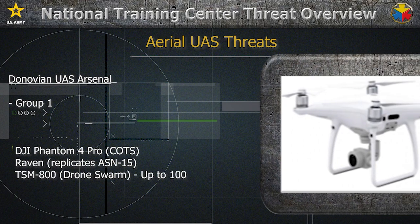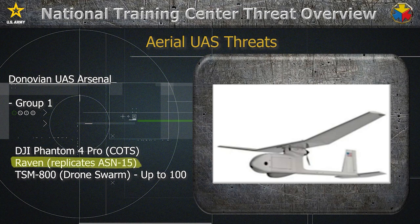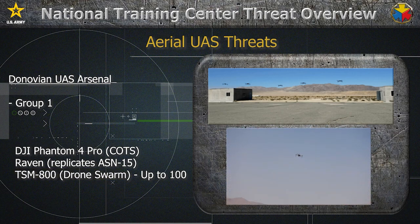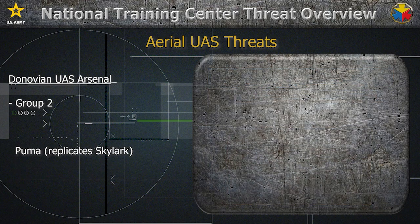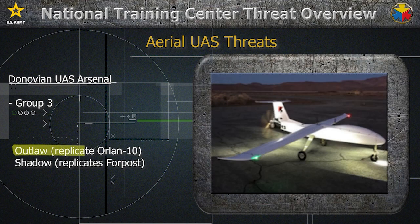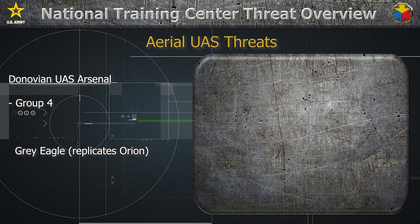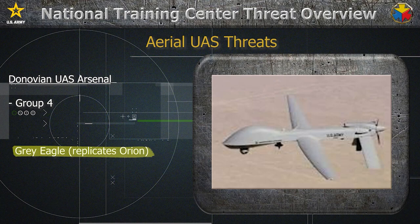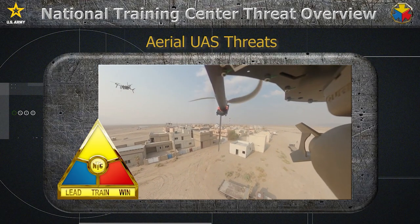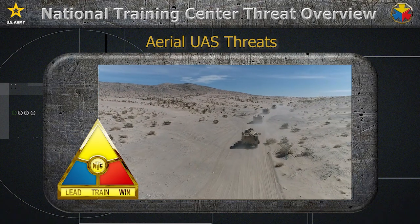I'd like to discuss the aerial UAS threats we have here at the National Training Center. For Group 1, we have DJI Phantoms, which are commercial off-the-shelf. Also, the OP-4 utilizes Ravens, which replicate ASN-15s. The TSM-800s are drone swarm-capable, up to 100 drones, and they can employ grenade-sized submunitions on units. For Group 2, the OP-4 has Pumas, which replicate the Skylark. For Group 3, the OP-4 has the Outlaws, which replicate the Orlan-10, and the Shadow, which replicates the 4-post. And finally, we have a Group 4 capability with the Gray Eagle, which replicates the Orion. The NTC is replicating these threats seen in theaters to give the training audience a more realistic training environment, forcing them to think about enemy UAS capabilities and better prepare for future conflict.